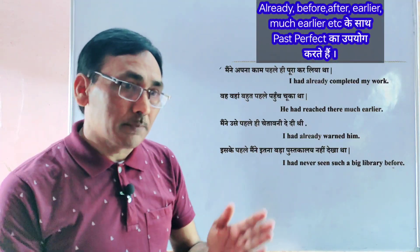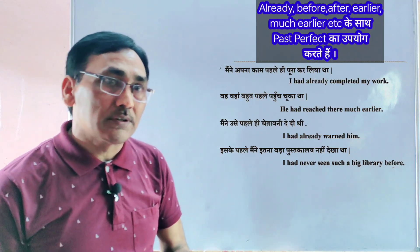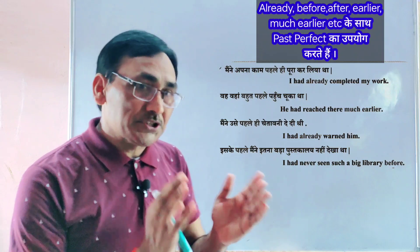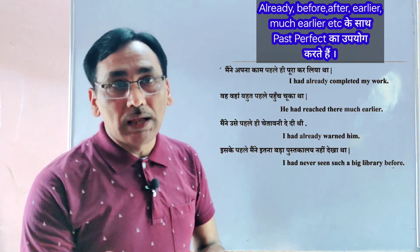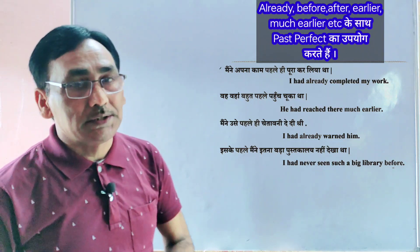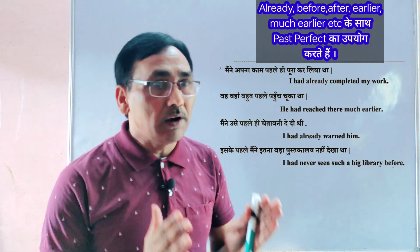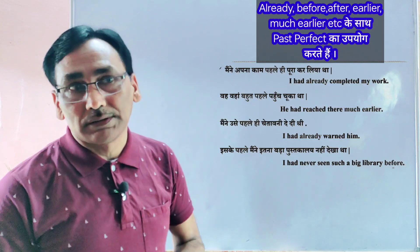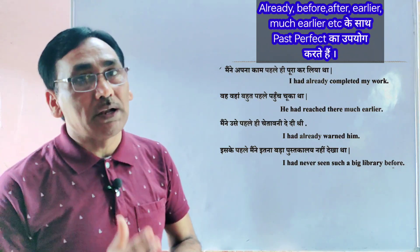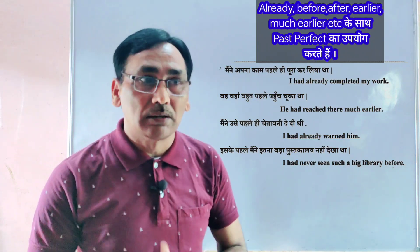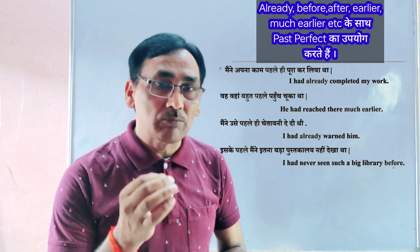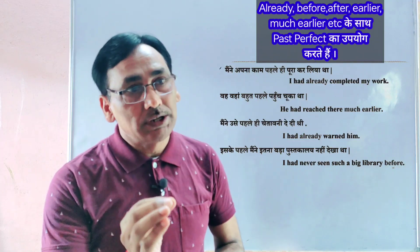कुछ अंग्रेजी words ऐसे भी हैं जिनके साथ अक्सर Past Perfect Tense का प्रयोग किया जाता है — जैसे already, before, after, earlier और much earlier। जैसे — I had already completed my work — मैं पहले ही अपना काम समाप्त कर चुका था। He had reached there much earlier — वह वहाँ बहुत पहले पहुँच गया था।